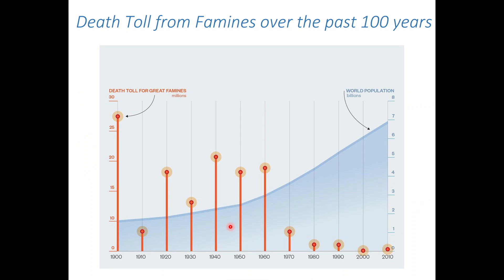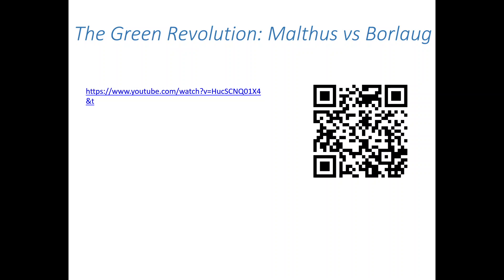We've seen this before, but there's a major drop around the 1960s — and this is where we made tremendous gains in terms of avoiding famine. This can be attributed to one single event: the Green Revolution. Let's take a look at this video.